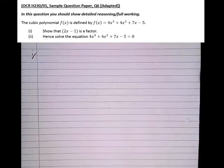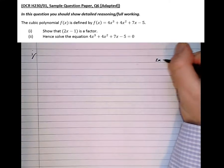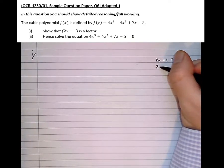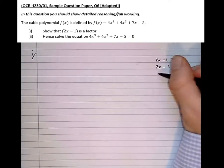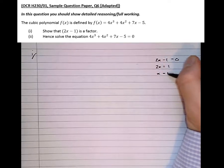So to find out what we need to sub in, take the factor, 2x minus 1, set it equal to 0, then solve it. So 2x equals 1, x equals 1 half.